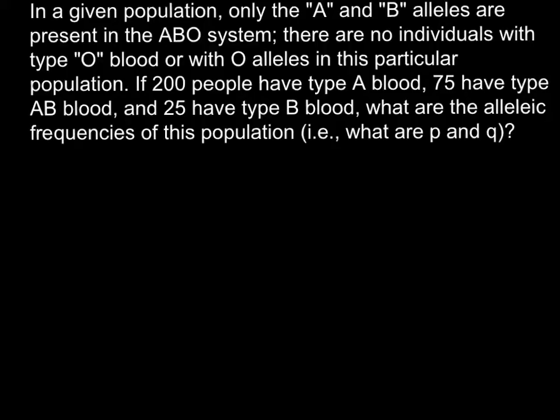In a given population only A and B alleles are present. In the ABO system there are no individuals with type O blood or with O alleles in this particular population. If 200 people have type A blood, 75 people have type AB blood and 25 have type B blood, what are the allelic frequencies in this population? Or what is the p and q frequencies?